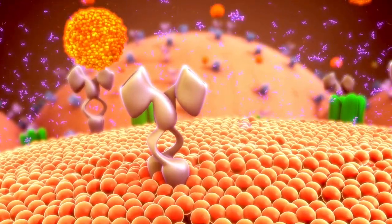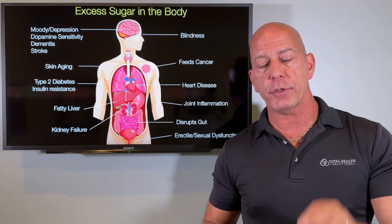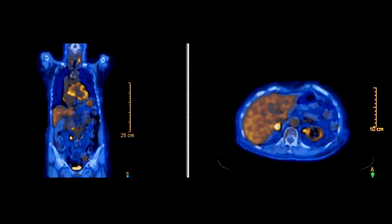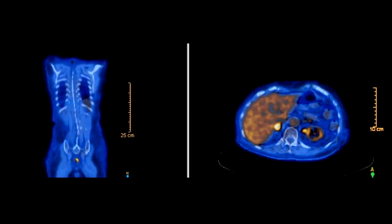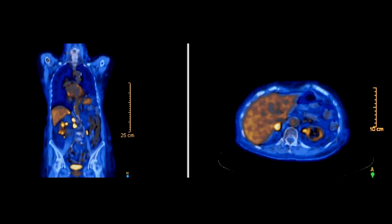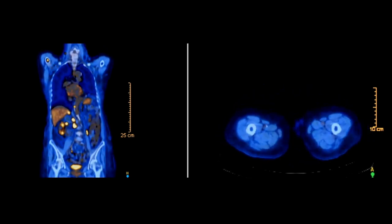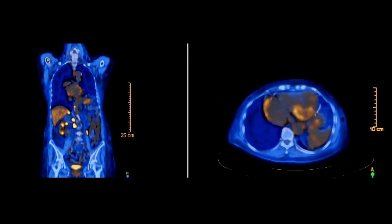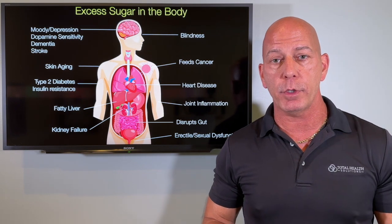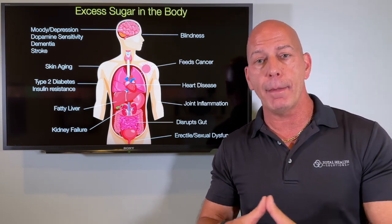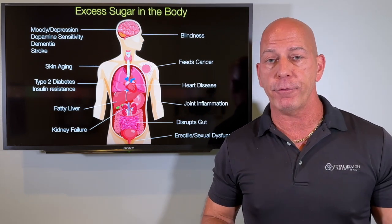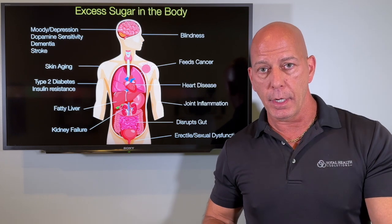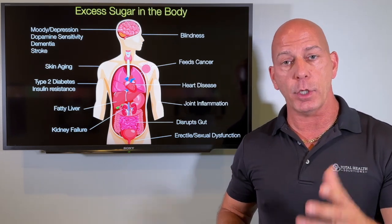Excess sugar can also feed cancer. Cancer cells have anywhere from 10 to 70 times more receptors for sugar than anything else — they love sugar. In fact, when people are being evaluated to see if they have cancer, doctors will do a PET scan, injecting a solution with a radioactive tracker and sugar. The cancer cells absorb all that sugar, and they light up where the cancer cells are because that's where the radioactive element is emitting signals. One of the best things we do with clients when helping them with cancer is get them on the metabolic healing diet, so they're using fat for fuel rather than sugar. You want to starve cancer cells by eliminating the sugar and giving them fat, which they cannot process.